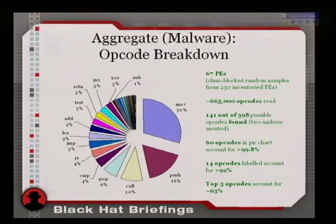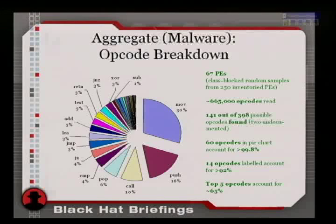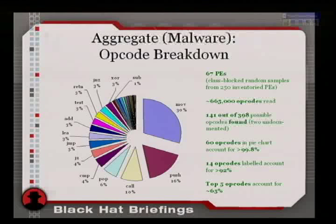I found two undocumented opcodes, which in hindsight showed me that rare opcodes do carry some information — but more on that later. This slide shows the aggregate malware on the outer rim, and on the inner rims the class-broken-down distributions: worms, virus, Trojans, bots, tools, rootkits — user and kernel.